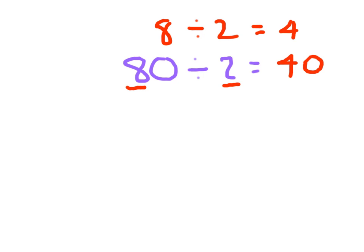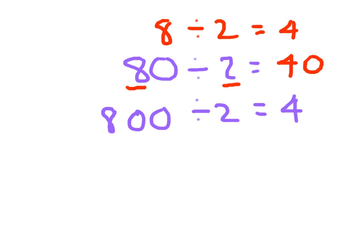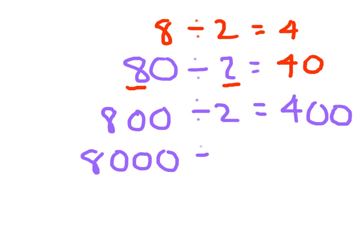Let's go forward from there. If we looked at 8 hundreds divided by 2, we still start with that basic fact of 8 divided by 2, which is 4. Since we're talking about 8 hundreds divided by 2, the way we write 4 hundreds is 4 with two zeros. And 8,000 divided by 2 would be 4,000.